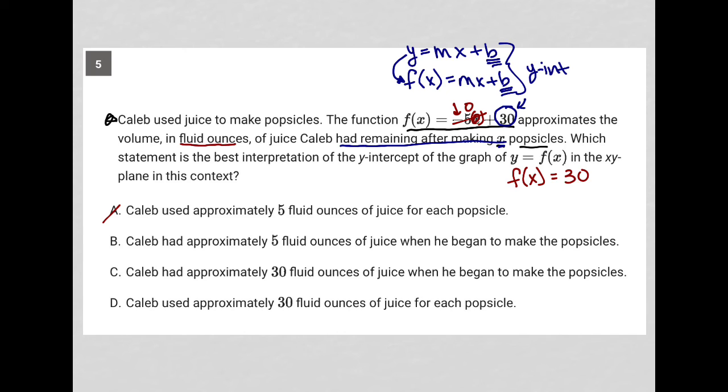Really, we shouldn't be dealing with 5 at all, because it's the 30 that is the y-intercept. Choice C, Caleb had approximately 30 fluid ounces of juice when he began to make the popsicles. Exactly. That's exactly what we just figured out. So Choice C must be the correct answer.